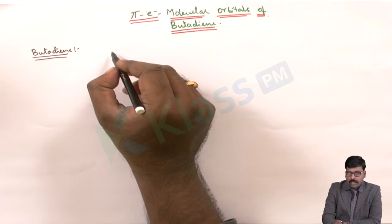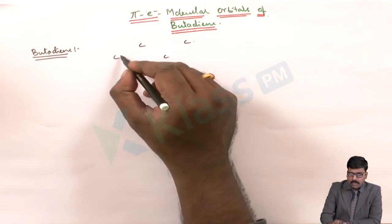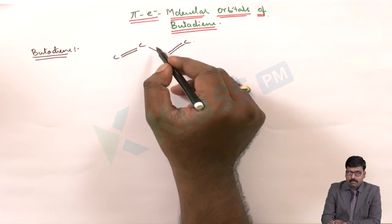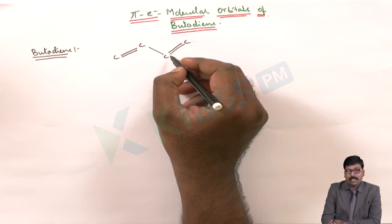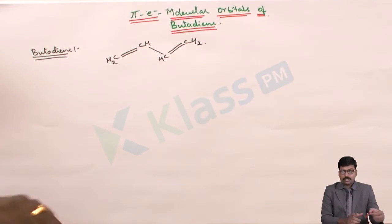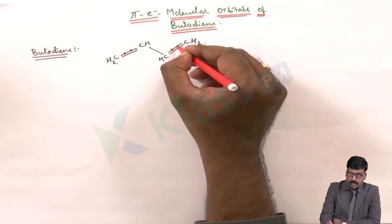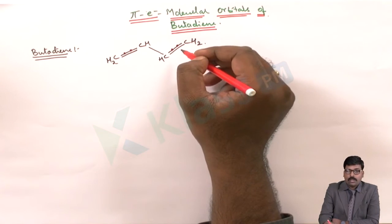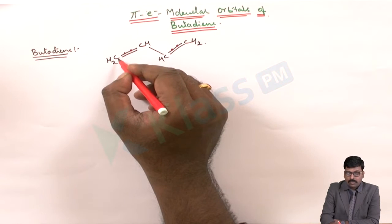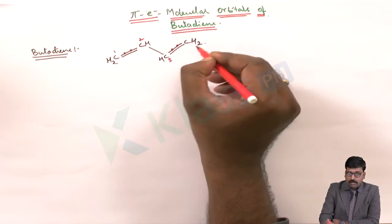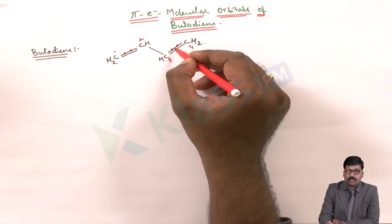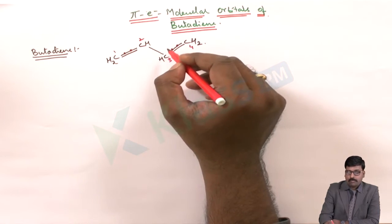Butadiene has four carbons, and these four carbons have a diene — two alternate double bonds. We can say that this butadiene molecule is a combination of two ethene molecules: CH2=CH–CH=CH2. The pi electrons present on these double bonds give us four electrons, for which we can draw the molecular orbital diagram. Because of conjugation, the pi electrons won't stay at one place; they will undergo resonance to form a stable molecule.